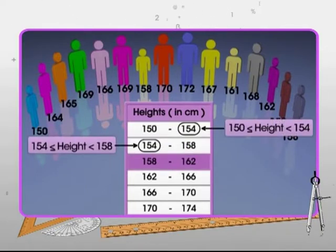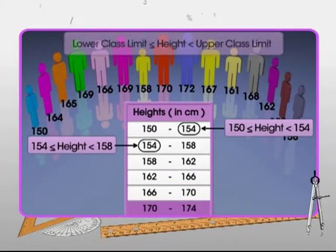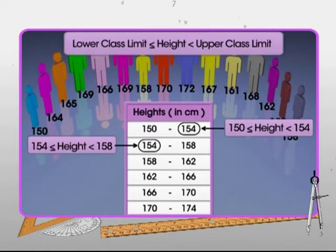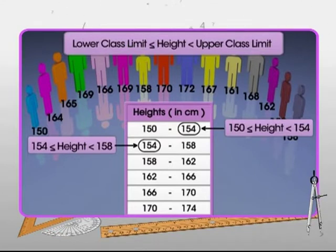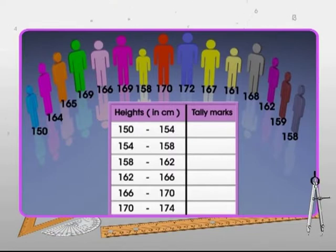We can generalize that each class interval represents the height greater than or equal to the lower class limit and less than the upper class limit. Now, complete the frequency distribution table by using tally marks.